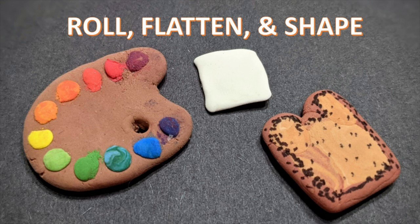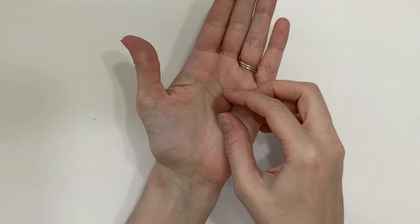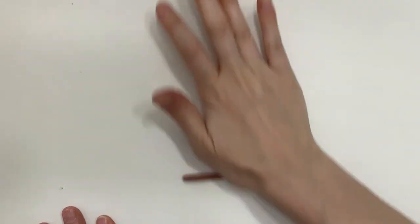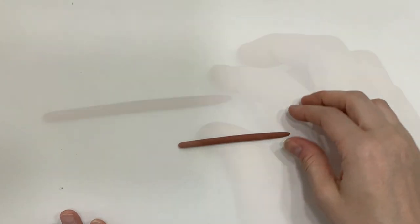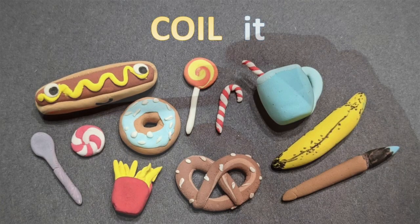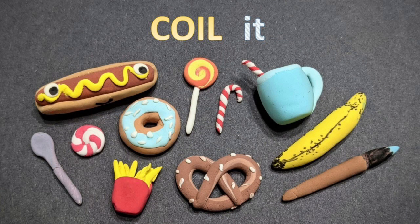To make a coil, you'll start with rolling your Model Magic into a ball. Then you'll lay it on the table and using the bottom part of your palm, you'll press down and roll it forward and back until it elongates and gets more slender. The more pressure you provide, the skinnier it will get.